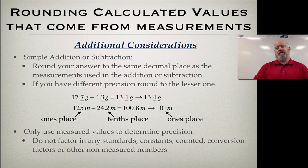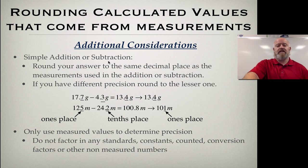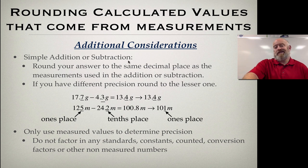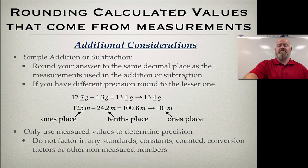There are additional considerations because not all math is as simple as that example. For adding and subtracting, we don't follow the exact same rules. Typically when you add and subtract you should be using measured values from the same measuring tool — for example, the same graduated cylinder for volume — so you should have the same precision at all times. For simple adding and subtracting, just round your answer to the same decimal place as the measurements used.